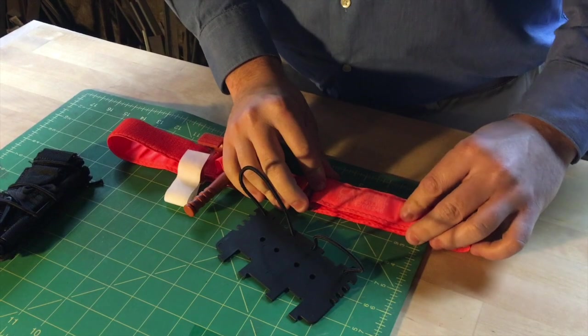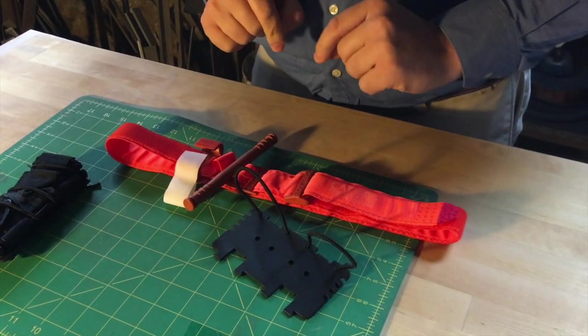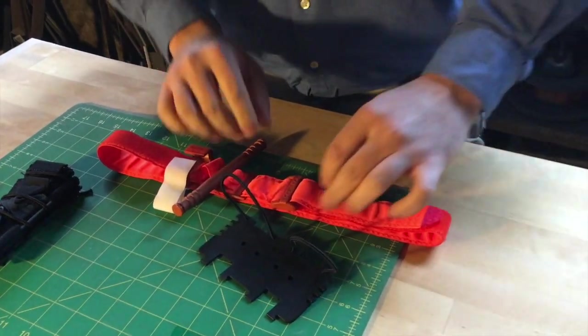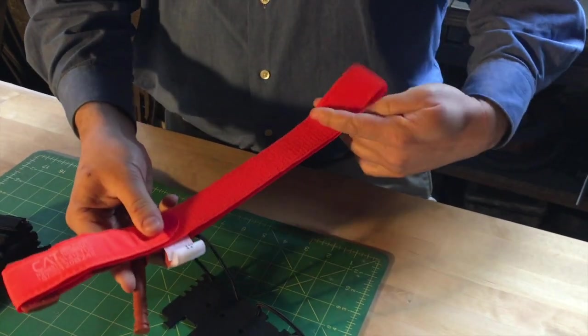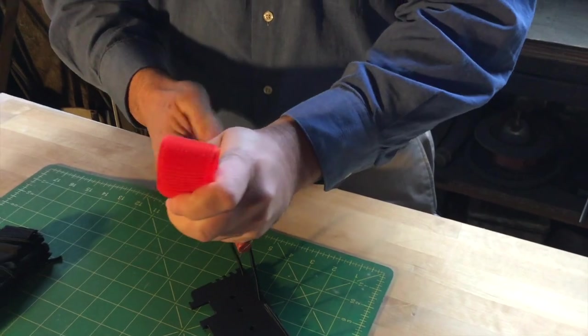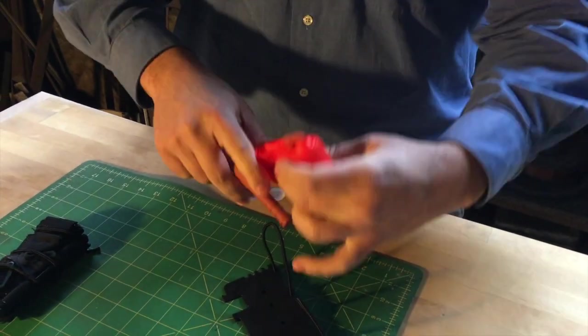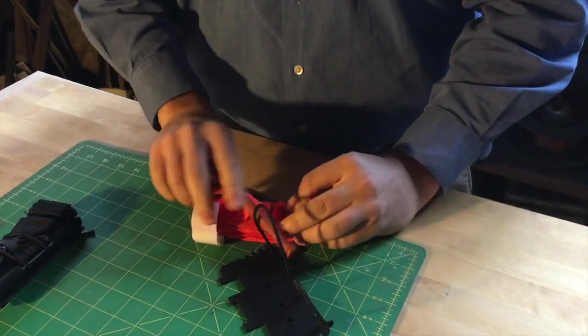Once you have this measured out, just slide it underneath, take the excess, and wrap it around from there.